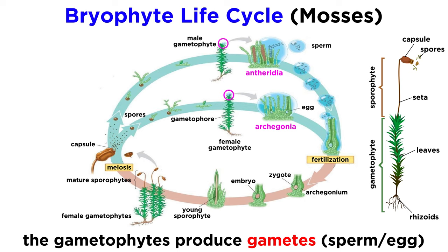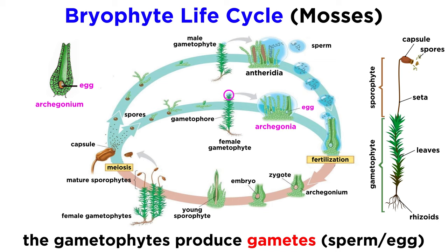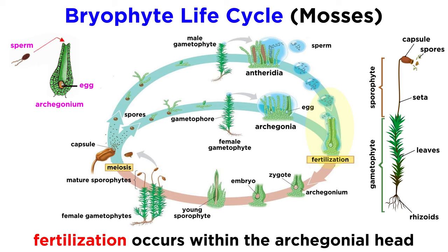Once the gametophyte thallus is mature, it will sprout two kinds of reproductive heads, called antheridia and archegonia. Antheridial heads have multiple antheridia, or places where sperm cells are produced through mitosis, rather than requiring meiosis as in humans, because the gametophyte is already haploid. Archegonial heads have multiple venters where egg cells are produced, also through mitosis.